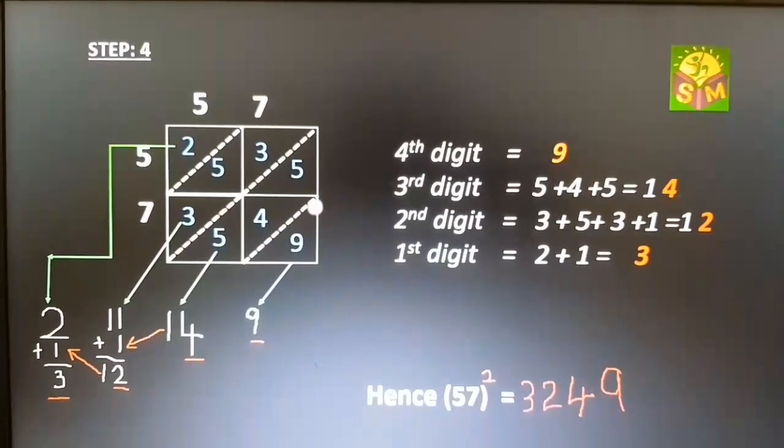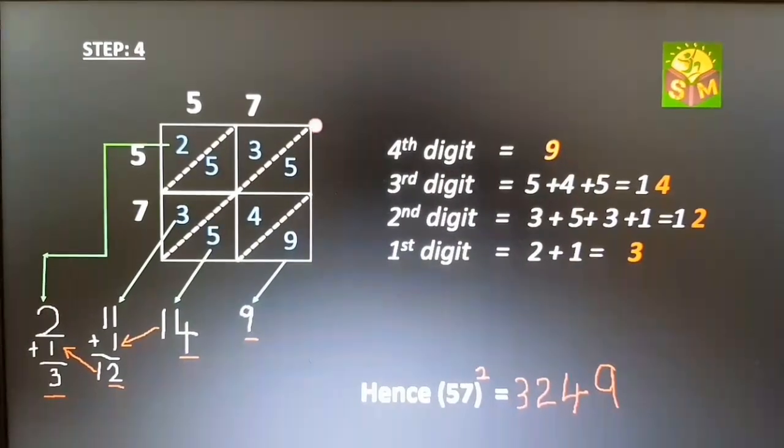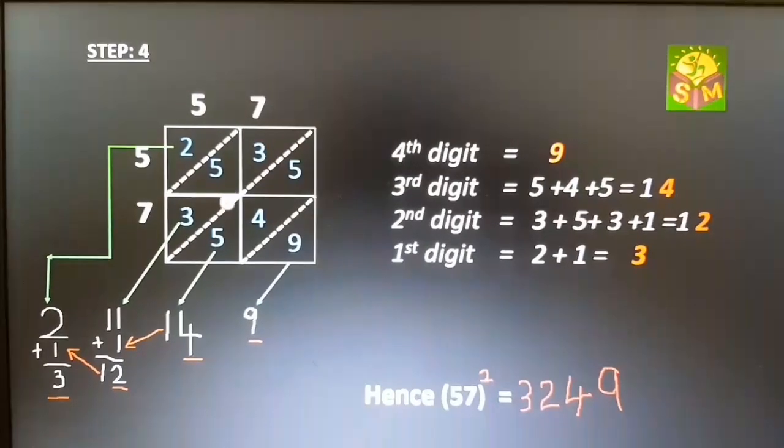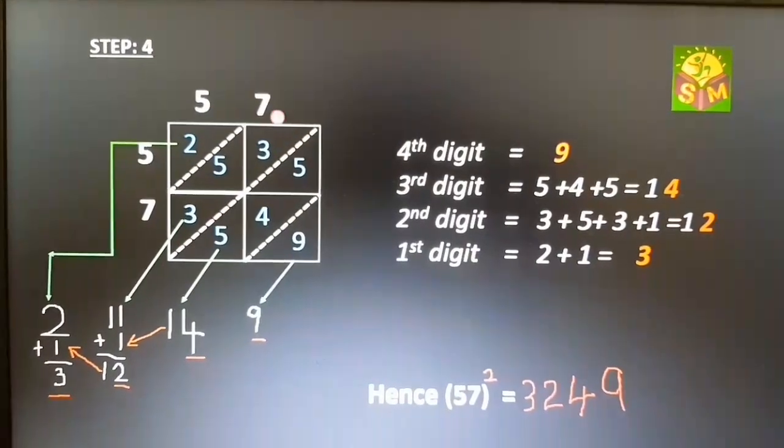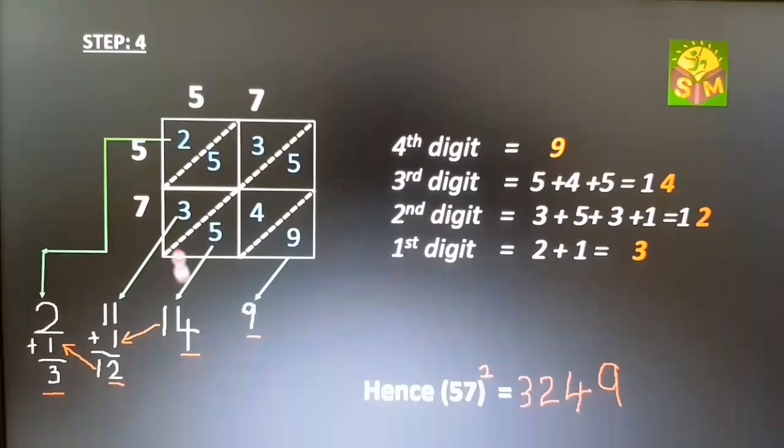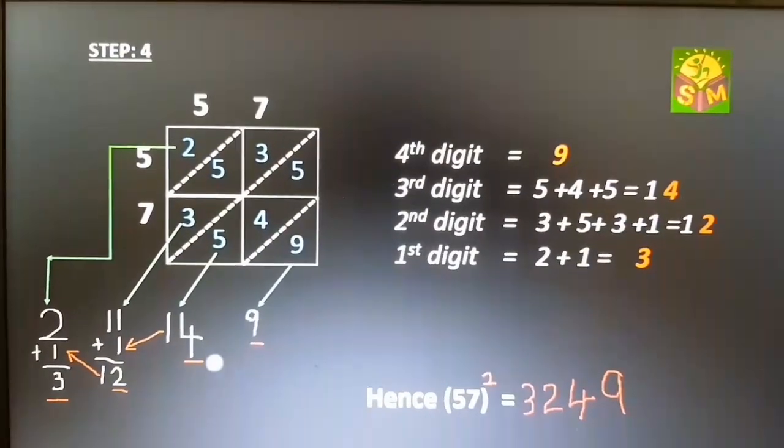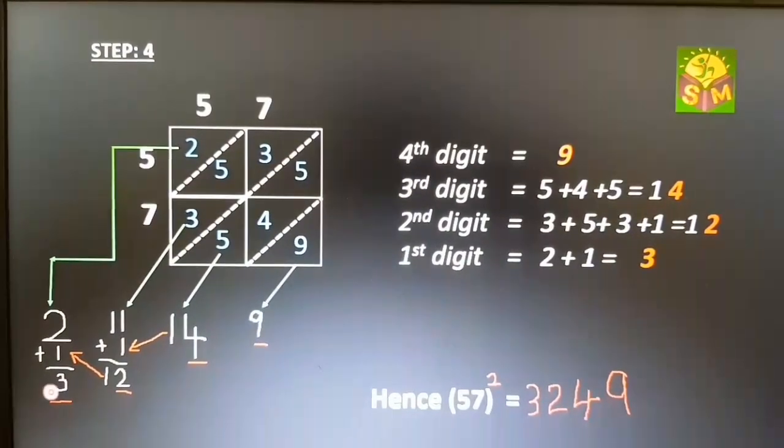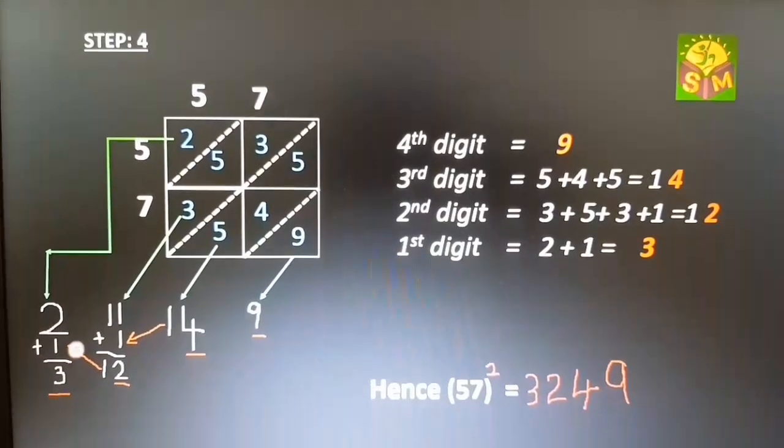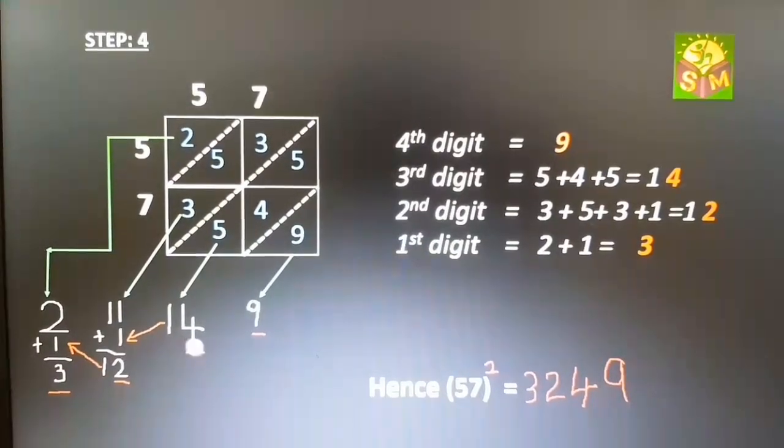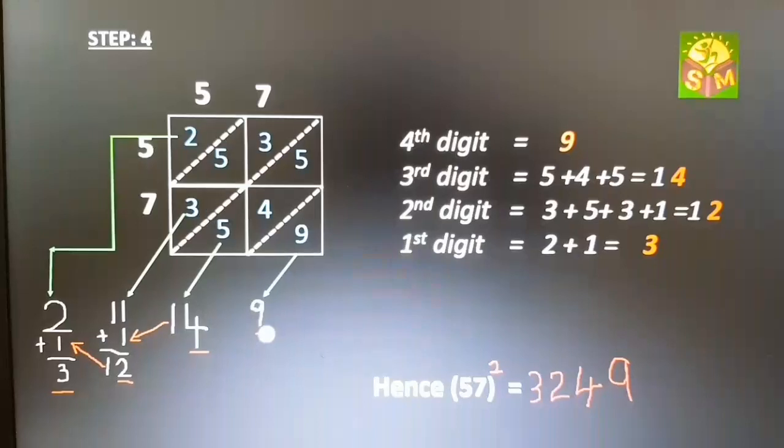Step 4: Finally, starting with the lowest diagonal, add the digits below each diagonal. Underline the units digit of each sum and carry the tens digit if any to the diagonal above. Write all the underlined digits starting from the topmost diagonal.